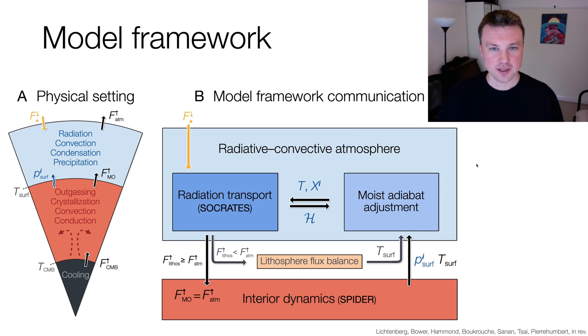To begin with, you see the computational framework that we use to solve the evolution of magma ocean planets in their overlying atmospheres. On the left-hand side, you see the physical setting with the iron core of the planet, the overlying initially completely liquid mantle, and the overlying atmosphere.